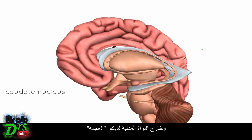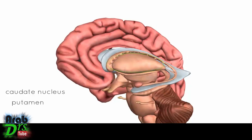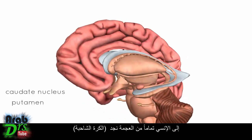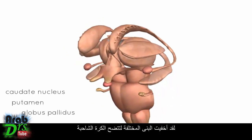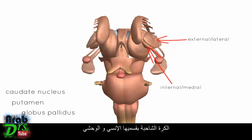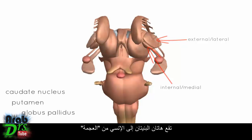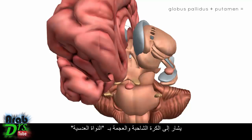Outside the caudate nucleus, you've got the putamen — this round curved structure. And just sitting medially to the putamen, you've got the globus pallidus. I've just faded away the various structures so you can see the globus pallidus, which has internal and external — or lateral and medial — parts. So the globus pallidus consists of these two structures, the lateral and medial globus pallidus, which sit medial to the putamen. Collectively, the globus pallidus and the putamen are referred to as the lentiform nucleus or the lenticular nucleus.